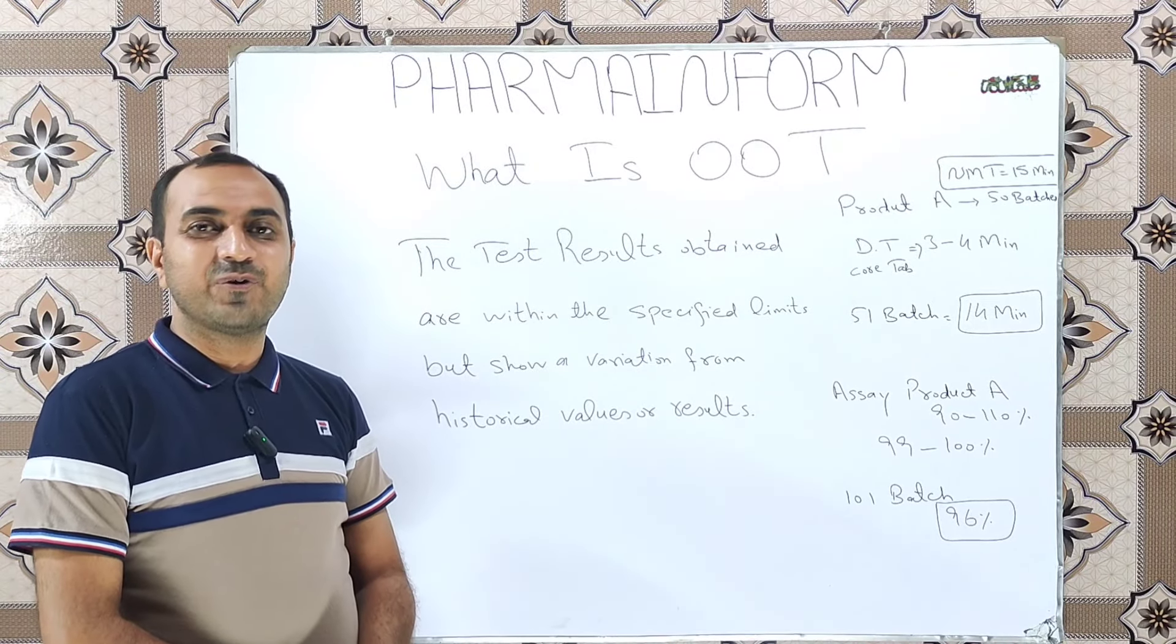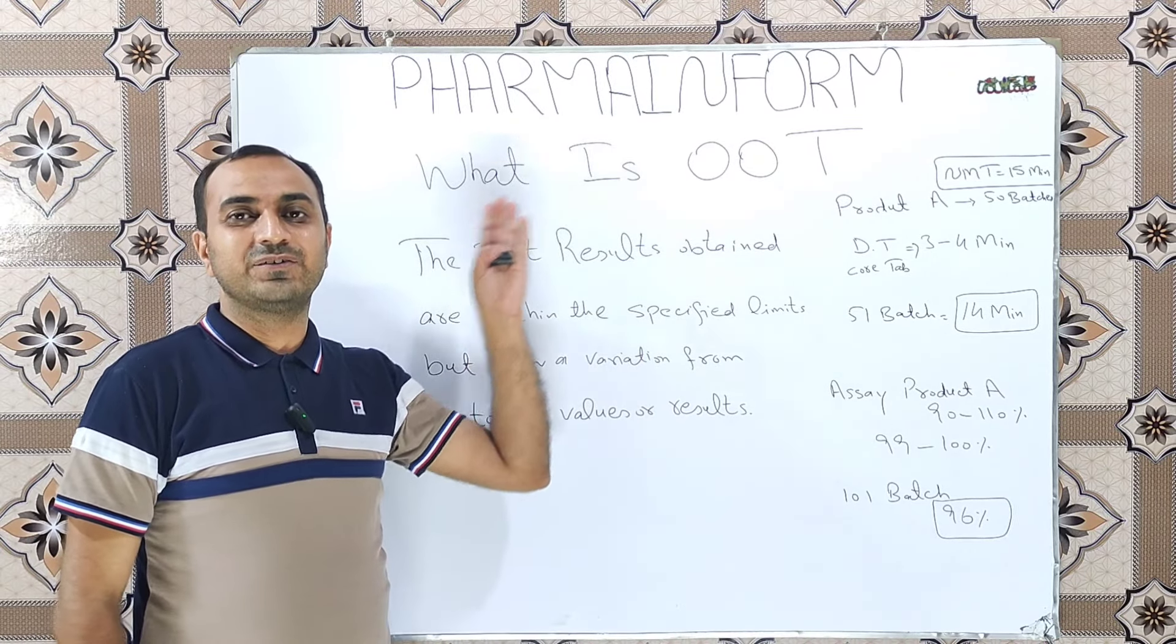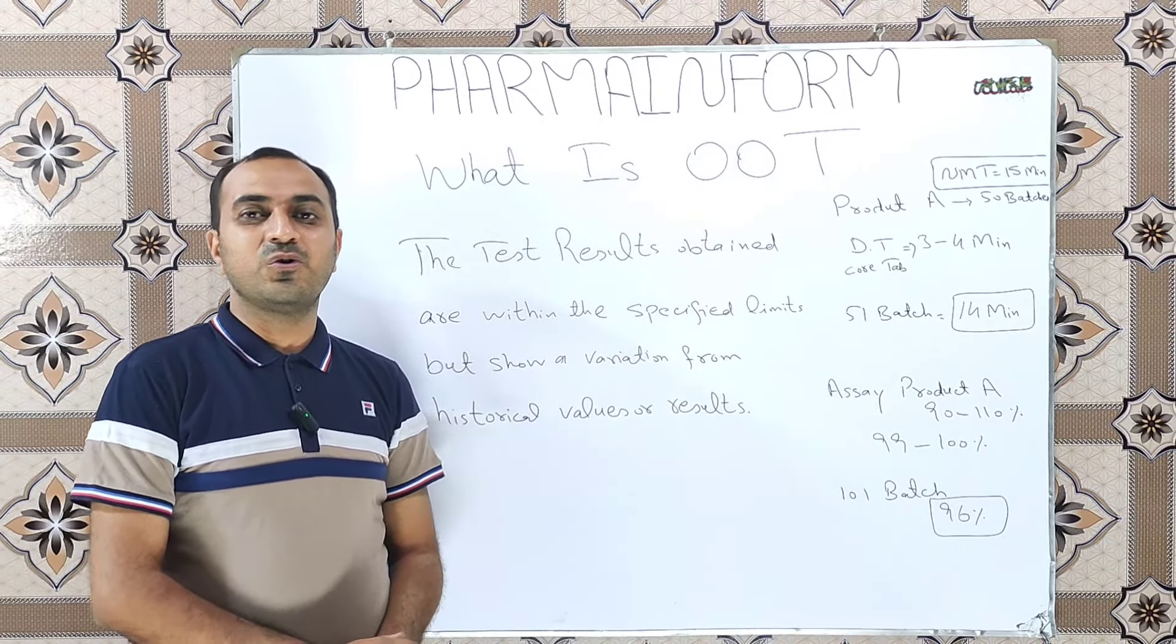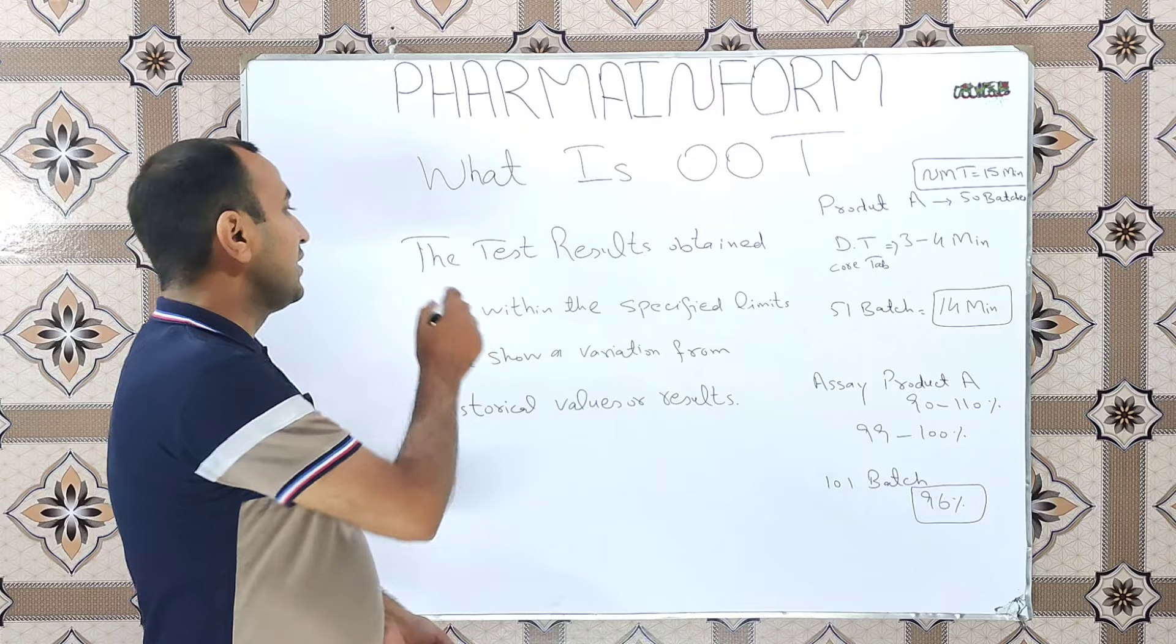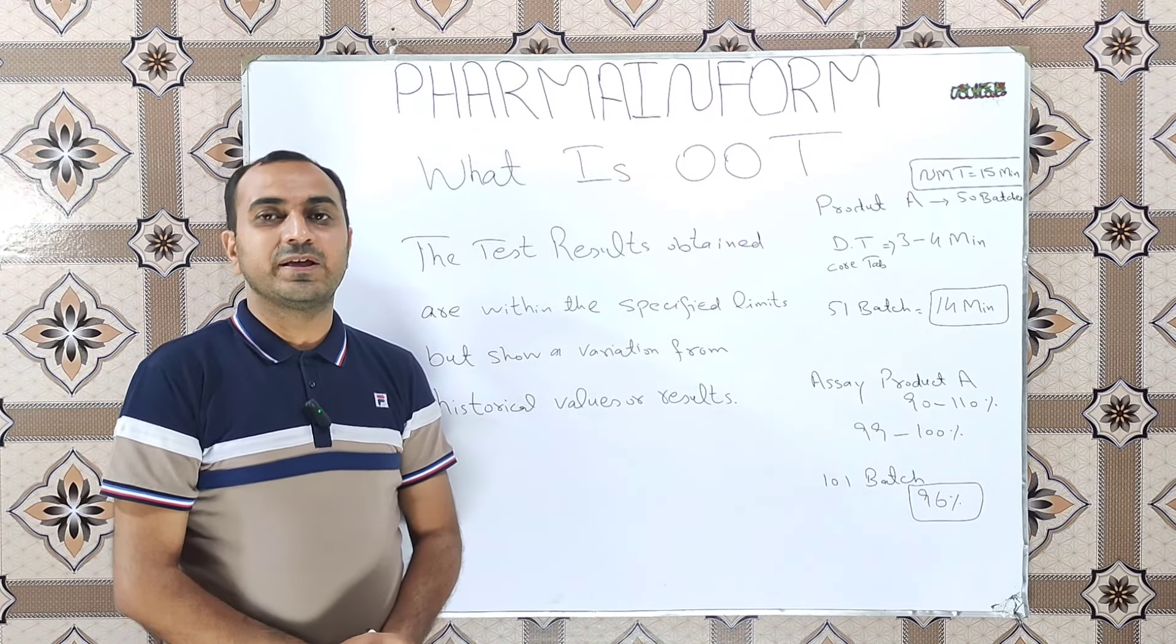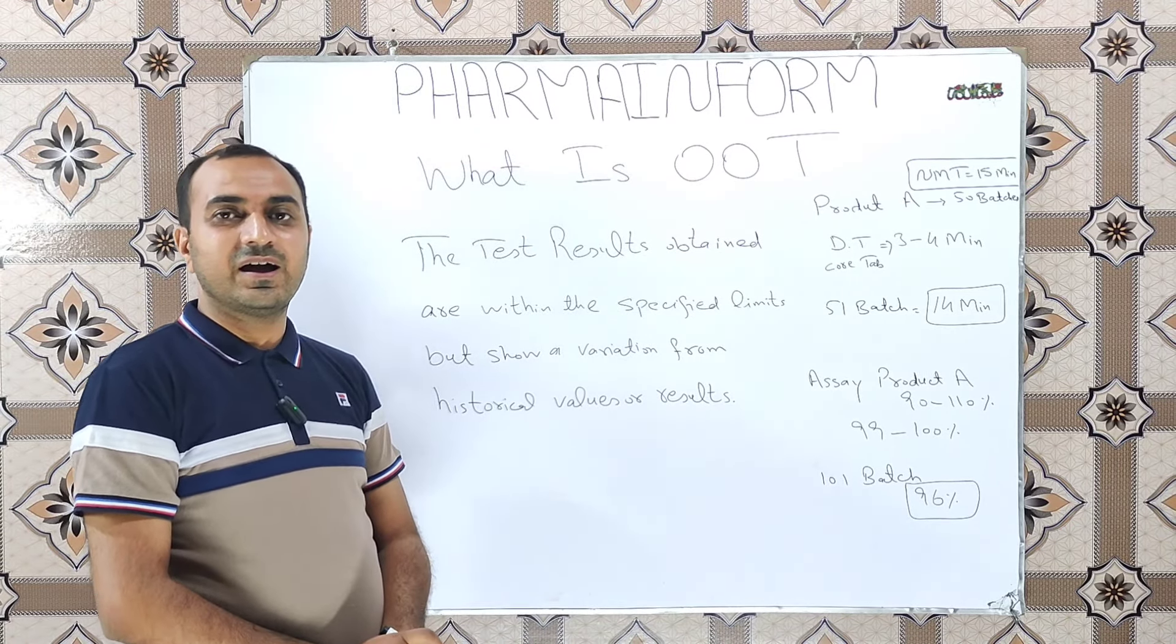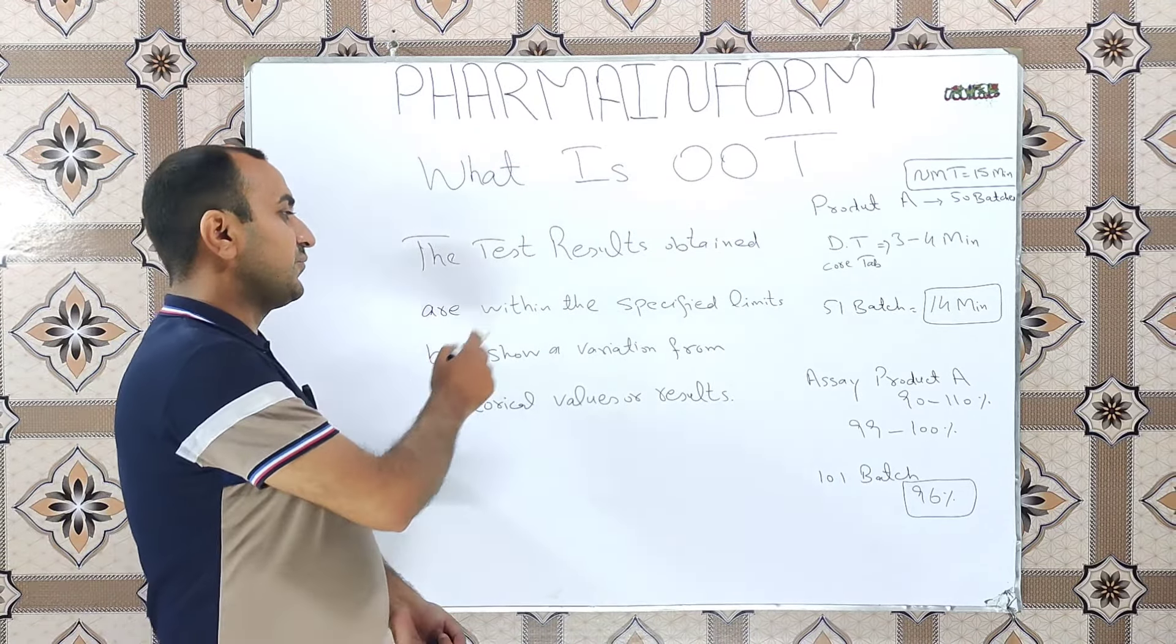Welcome to Pharmalouform and today we will discuss what is OOT. OOT is also known as out of trend. The simple definition of out of trend is defined as the situation where the results obtained for a specific product are within the specified limits but show a variation from the historical values or results.